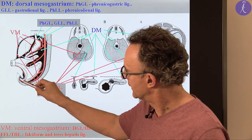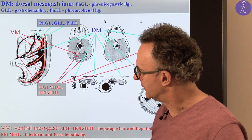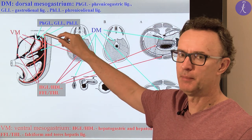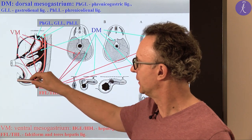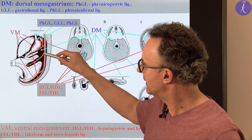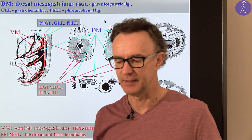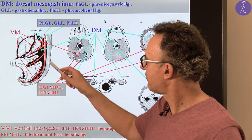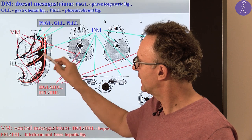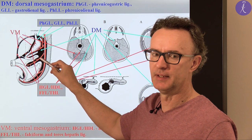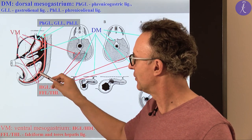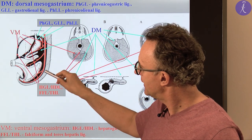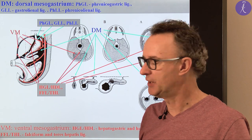Here you see the abdominal aorta. It has three major unpaired visceral branches: the upper is the celiac trunk, the next one is the superior mesenteric artery, and the third is the inferior mesenteric artery. They supply certain parts of the GI tract.